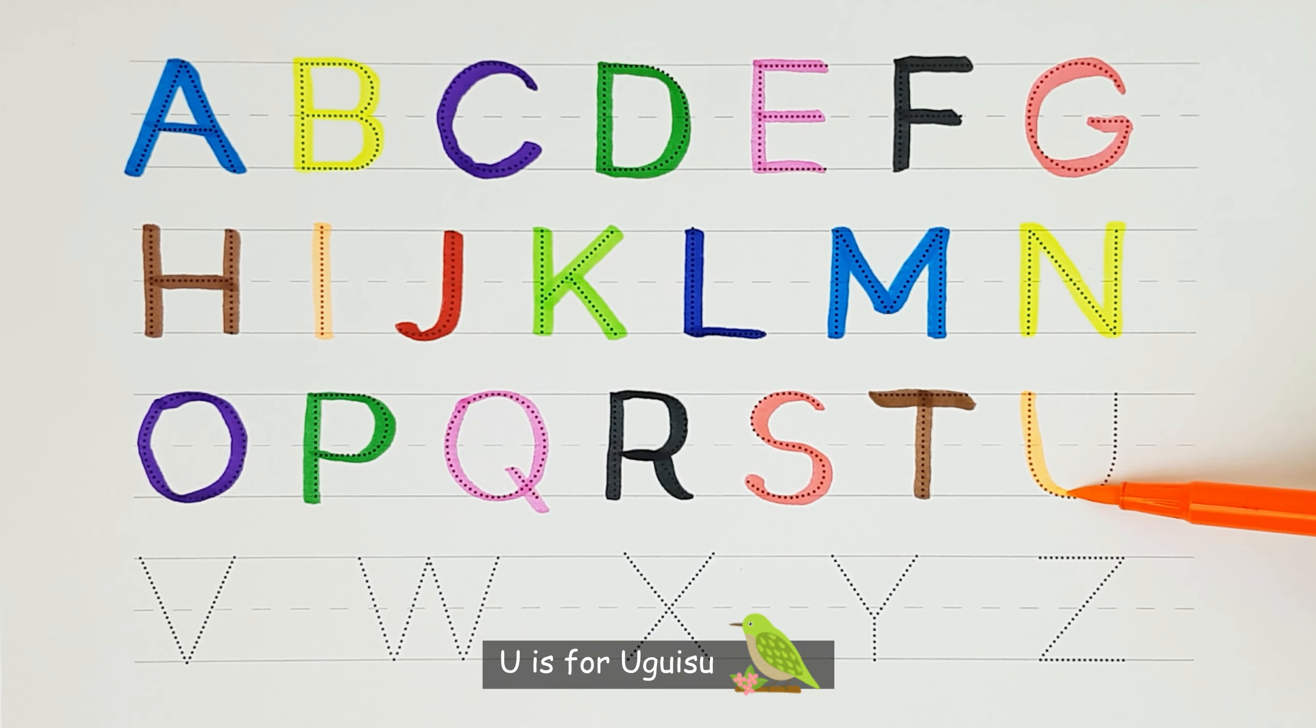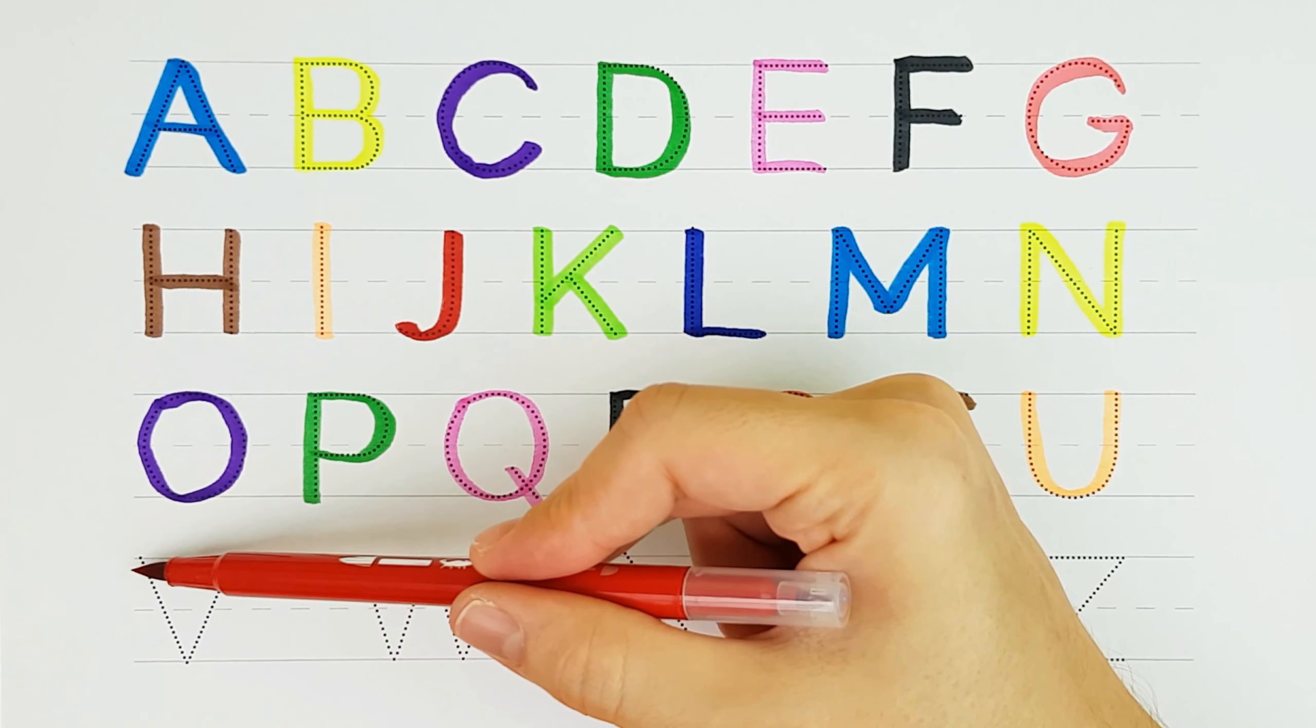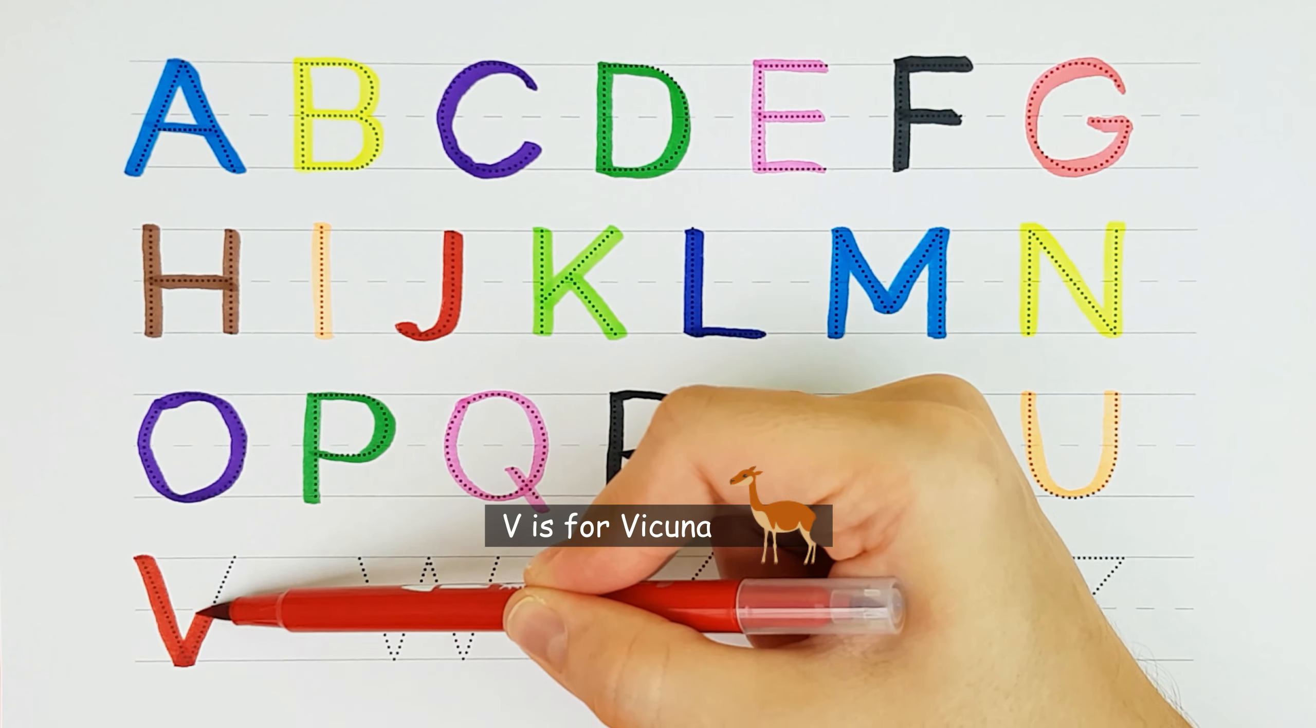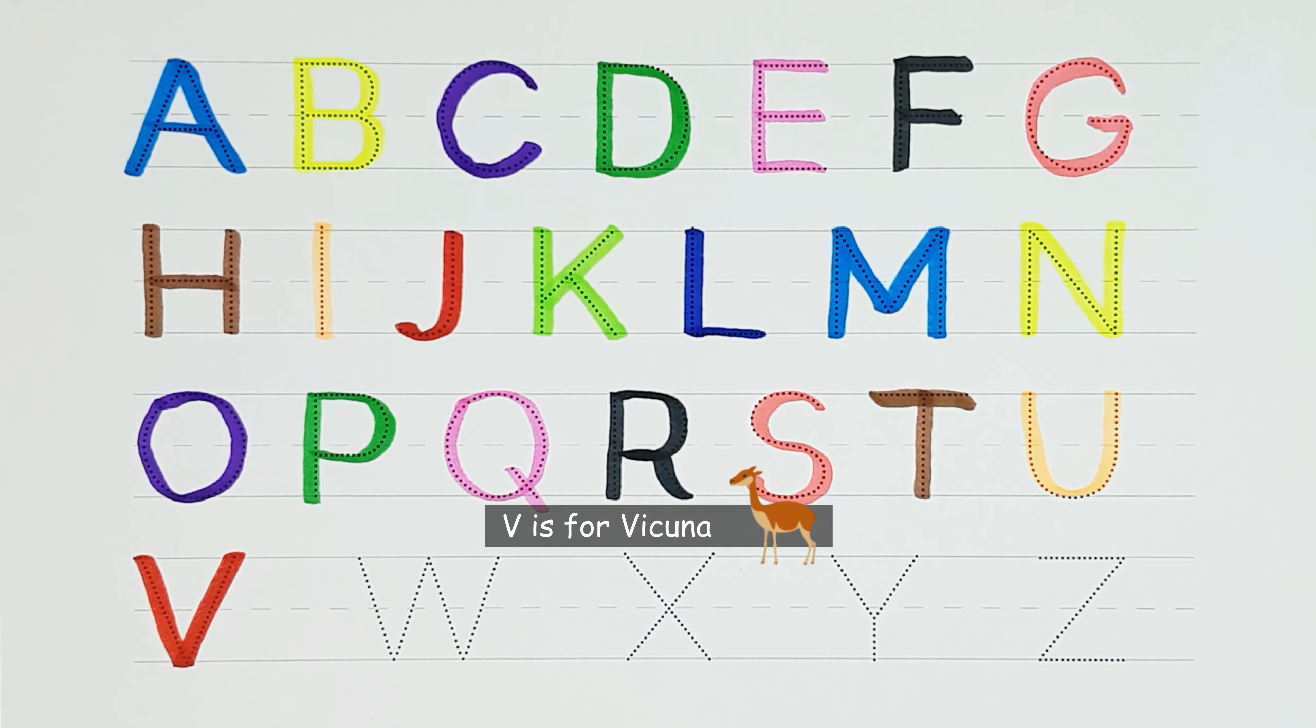U. U is for uguisu. U. V. V is for vicuna. V.